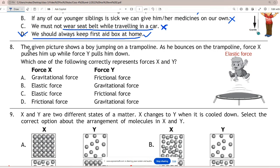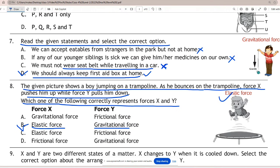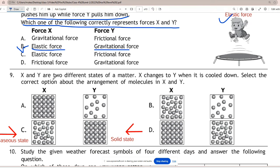Question 8: The given picture shows a boy jumping on a trampoline. As he bounces on the trampoline, force X pushes him up while force Y pulls him down. Which one of the following correctly represents forces X and Y? Correct answer is B. For bouncing on the trampoline we need elastic force. For coming down we need gravitational force, as gravitational force pulls an object down while elastic force pushes upward in air.